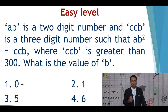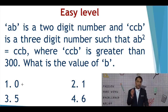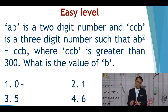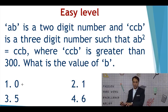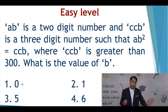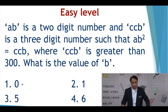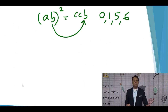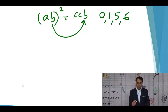Looking at the options, all four values — 0, 1, 5, and 6 — are present. This means step number two is required. Had the options included only one of these four, we would not need to proceed further. However, in this scenario, step number two is required.